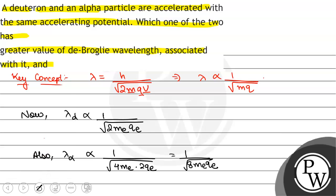Therefore, from these two relations we have lambda deuteron by lambda alpha particle is equal to root under 8 by 2, that is 2.